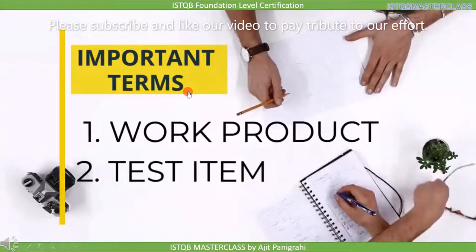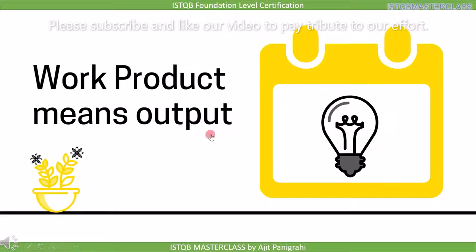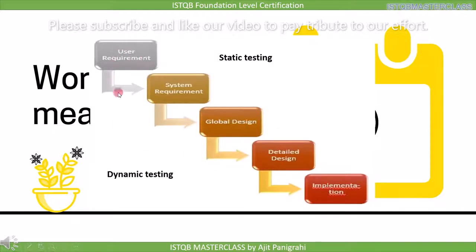We should know what is the meaning of work product and test items. Work product means output. These are the steps followed during development of software in an organization: first, get user requirements; then develop system requirements; then comes global design; next is detailed design; and last is implementation where the software is developed. The output of each stage is the work product — for example, the system requirement document, design document, or code.